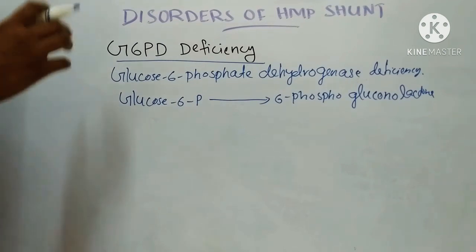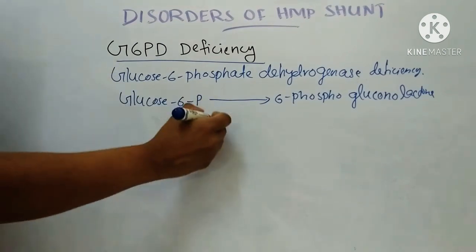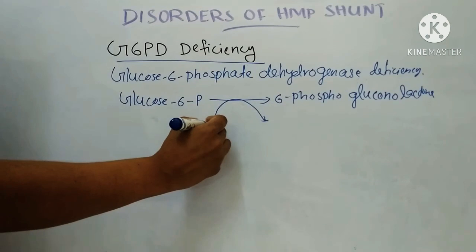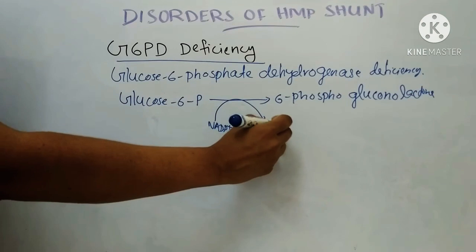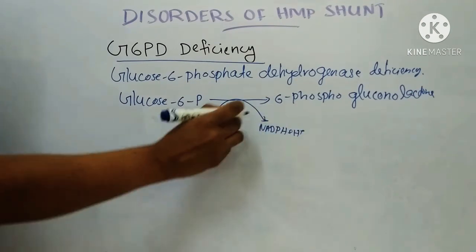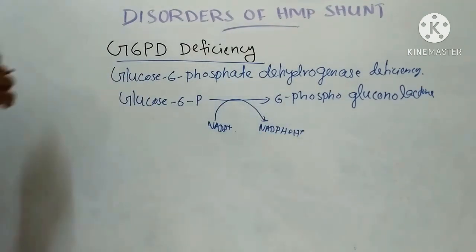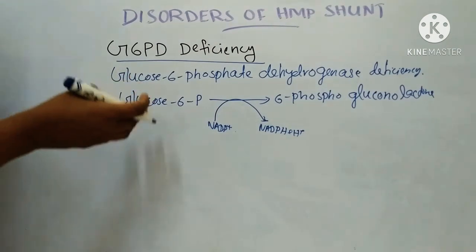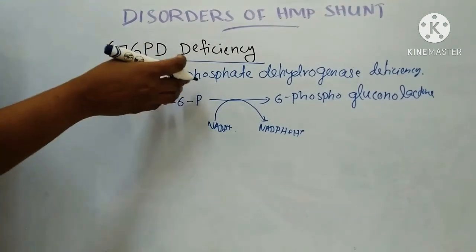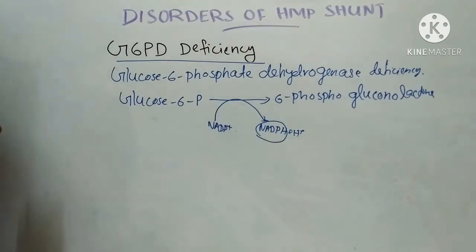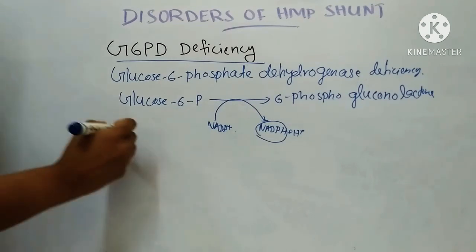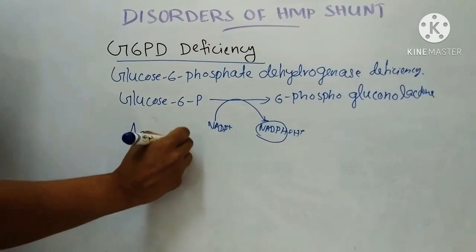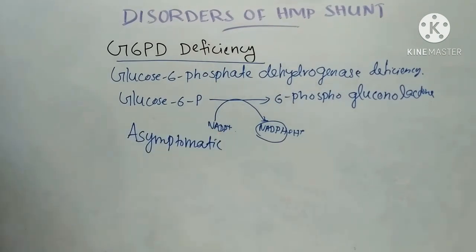In this reaction, one molecule of NADPH is produced. If there is deficiency of this enzyme, there will be deficiency of NADPH. It is the most common genetic defect, but these cases are mostly asymptomatic.